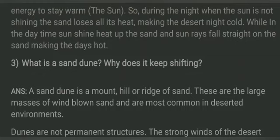The next question is: what is a sand dune and why does it keep shifting? A sand dune is a mountain, hill, or ridge of sand. These are large masses of wind-blown sand most common in desert environments — essentially small hills of sand found in deserts.